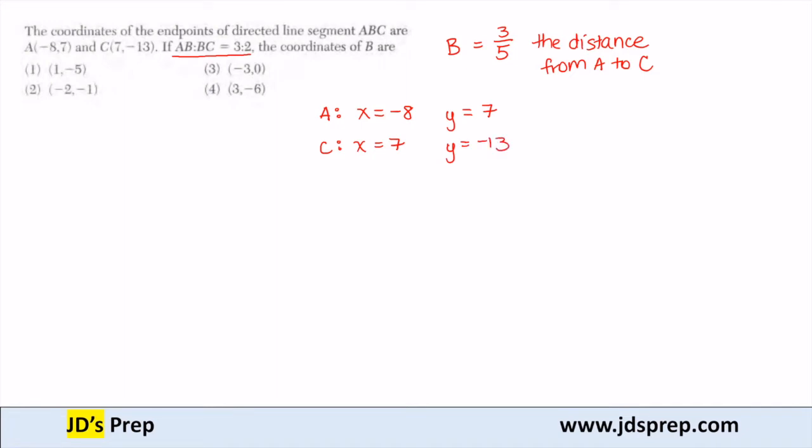B is three-fifths the distance from A to C because the ratio is 3 to 2. For B, my x-coordinate, beginning with A, is -8